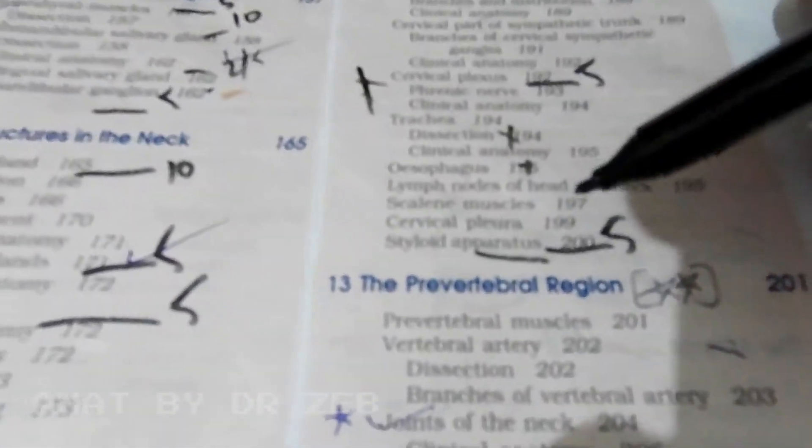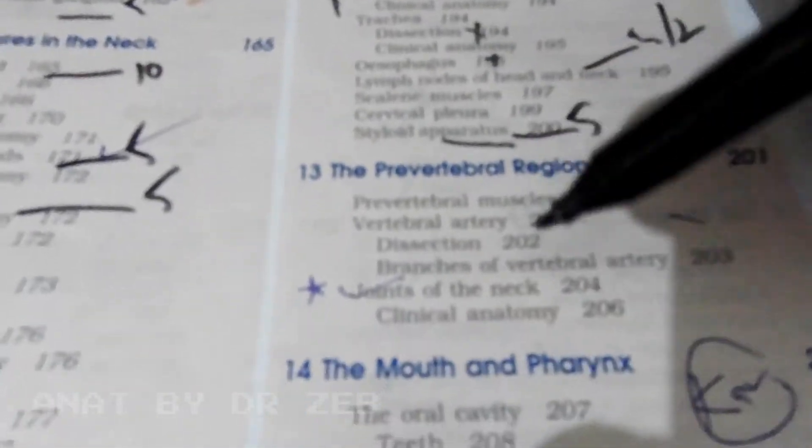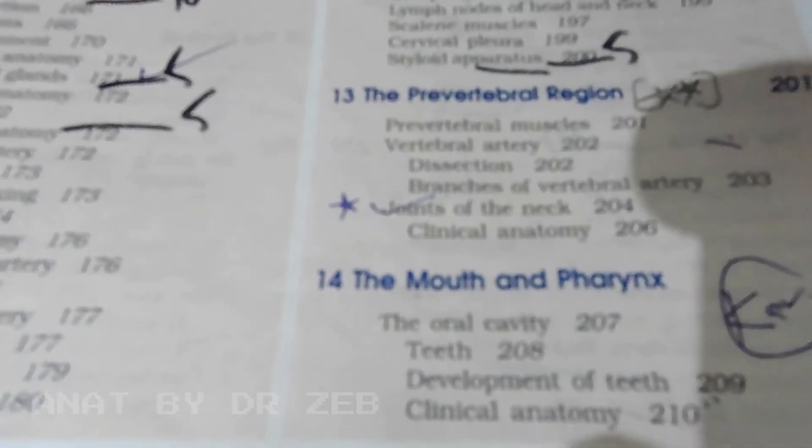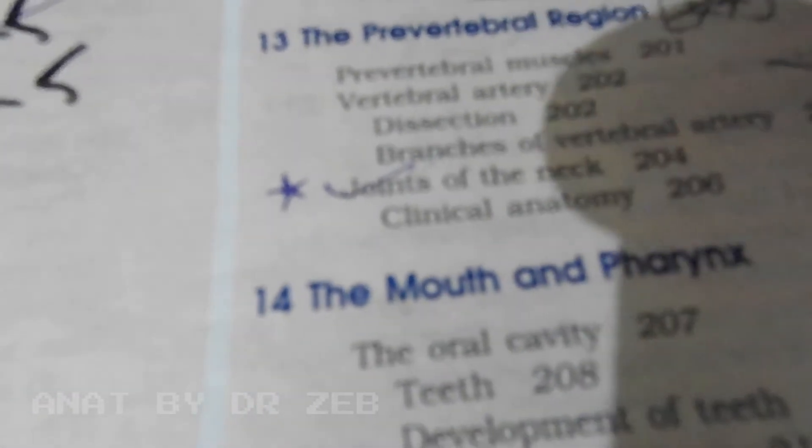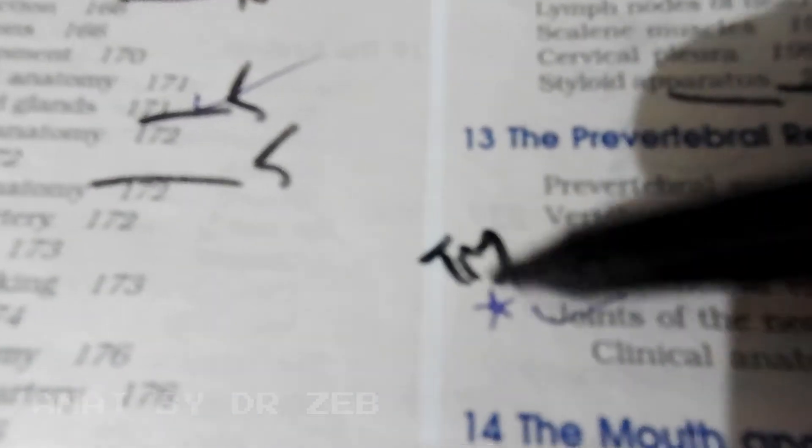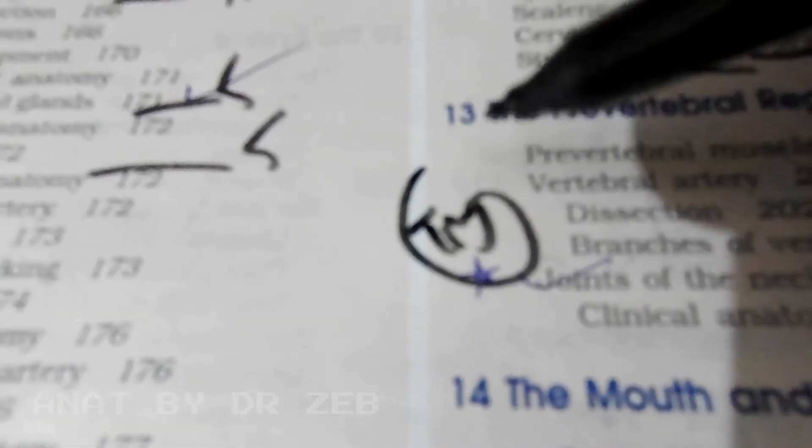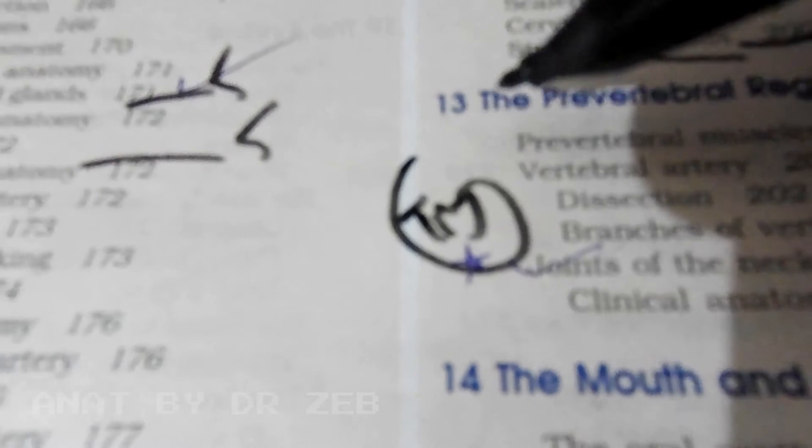Lacrimal apparatus is a five mark question. Joints of the neck, one thing not given in the syllabus but very important is TMJ. You'll study that in biomechanics. TMJ is a ten mark question, muscles of mastication is a ten mark question. Read that in the temporal infratemporal fossa.